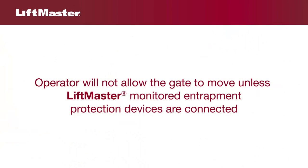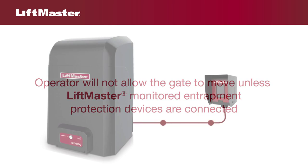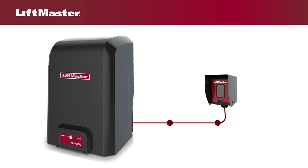Now we need to select a second protection device for each of the entrapment zones. As an added safety feature, our operators will not allow the gate to move unless each of those external protection devices is monitored. A monitored device sends a pulsed signal to the operator so the operator is aware of the device. If the operator does not receive the signal from the device, it will not run.